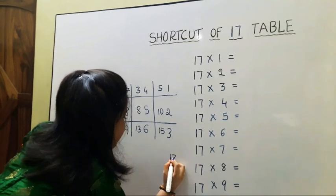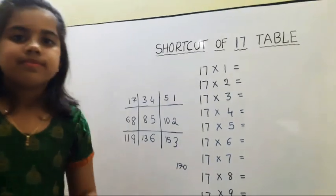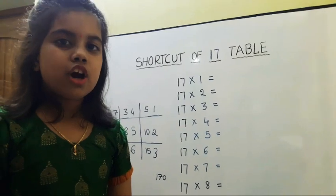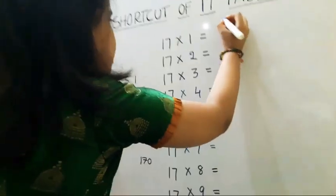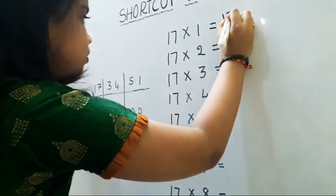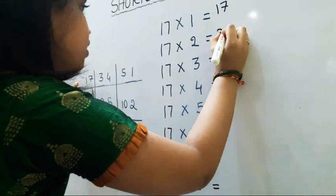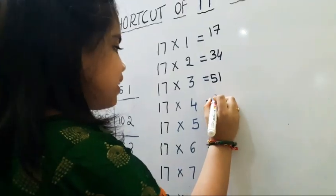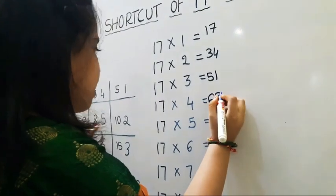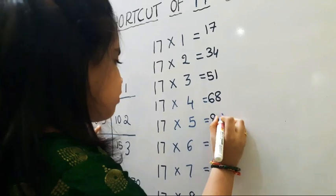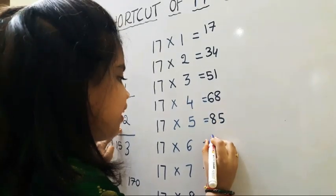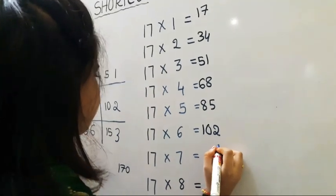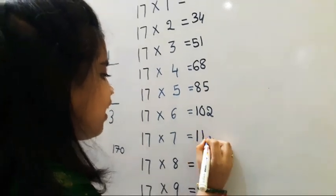Here we should write 170. Now we should write 17 table following this shortcut order: 17, 34, 51, 68, 85, 102, 119.